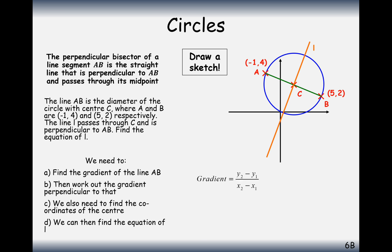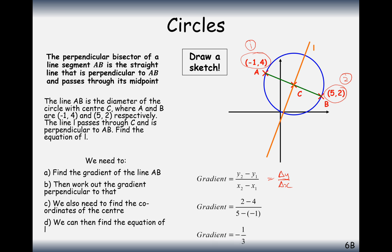The first thing we need to do is work out the gradient of A to B. We can tell it's going to be a negative gradient. Using the formula y2 minus y1 over x2 minus x1 — on the y coordinates it's 2 take away 4, and on the bottom it's 5 take away negative 1. So we get minus a third. That's the gradient of AB done.